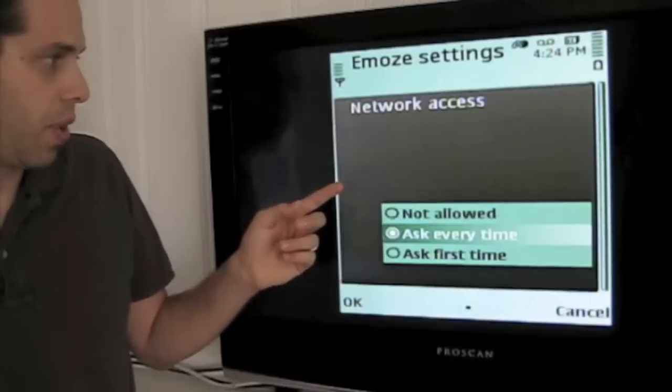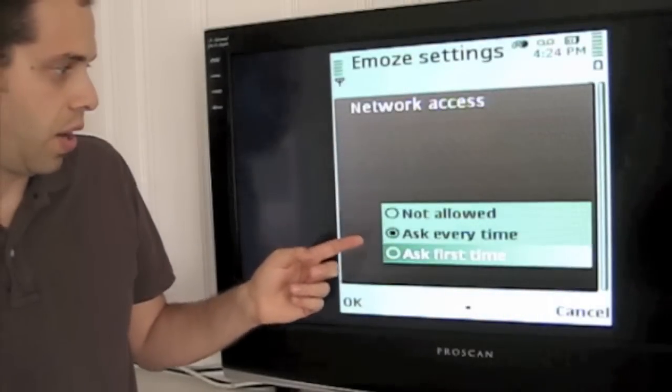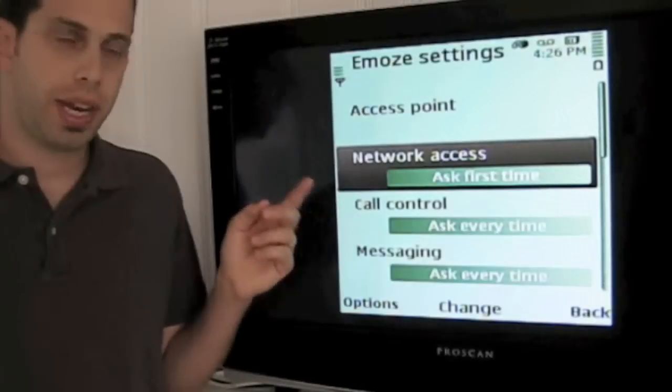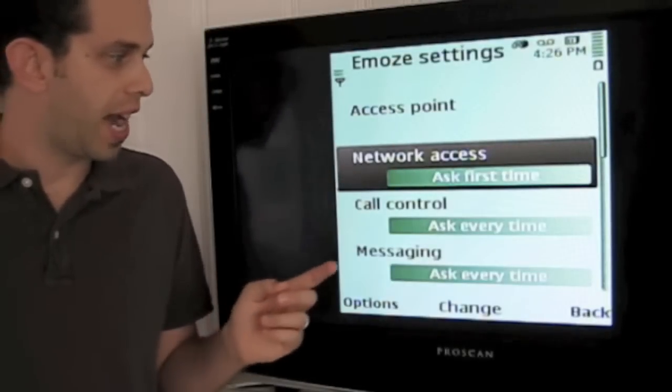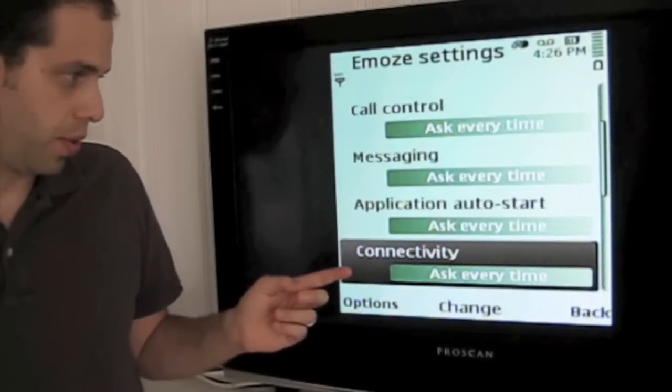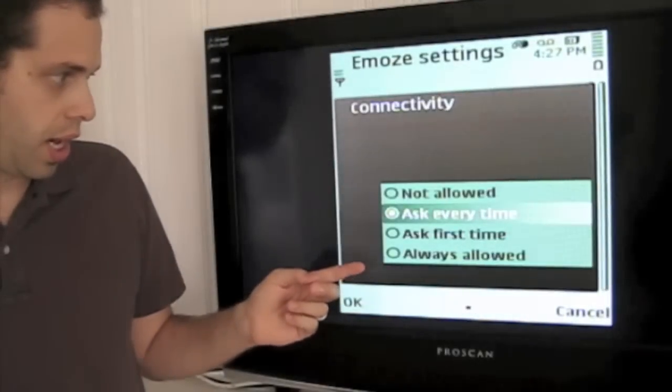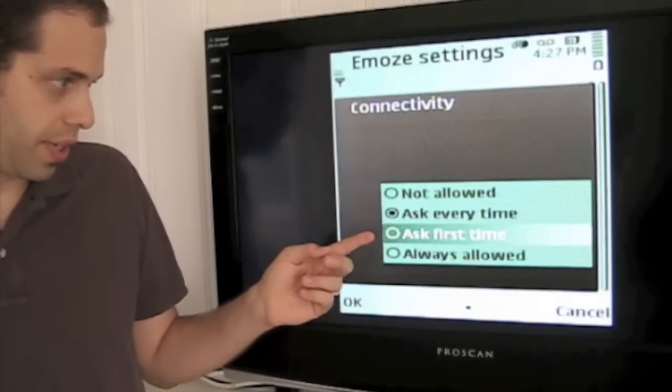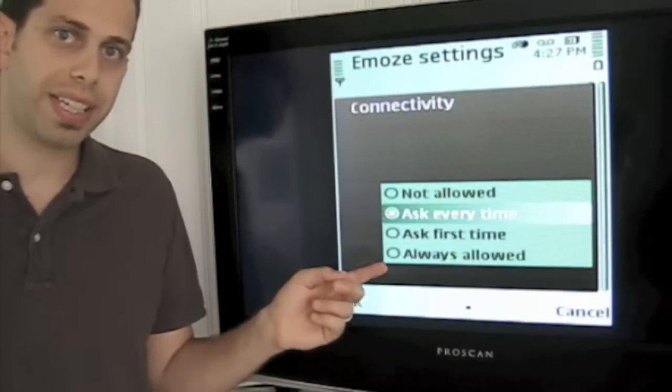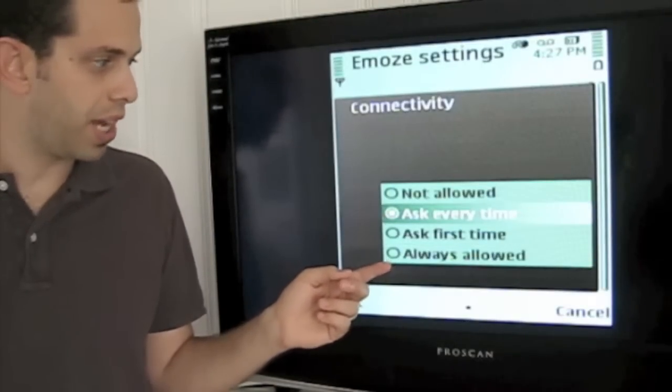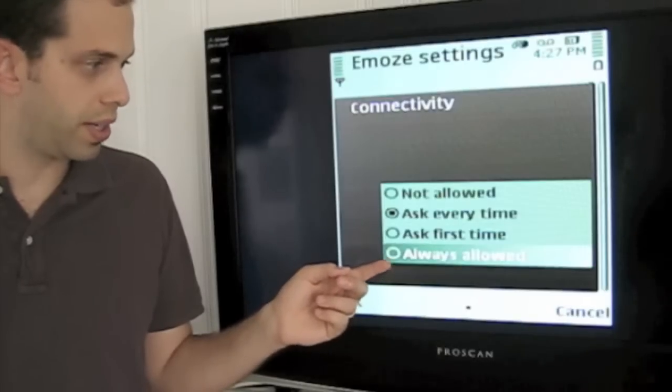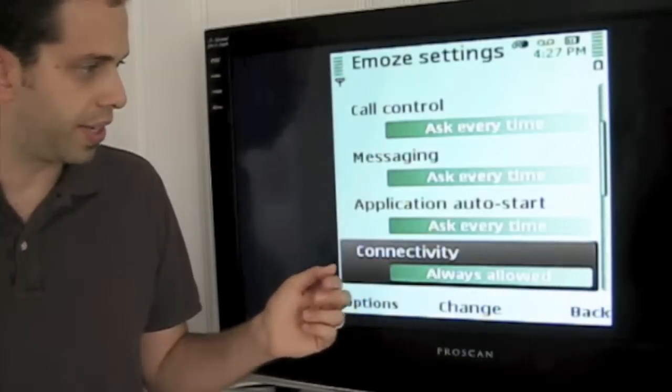We'll scroll down to Network Access and say Ask First Time. Now that we've set Network Access to Ask First Time, scroll down to Connectivity and click Ask First Time. Get the option to be asked the first time the Java application accesses the internet or always just allow it. I prefer always allow.